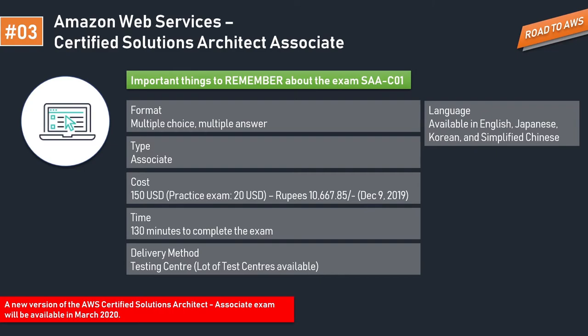When converted to rupees, that's around 10,667 as of December 9th. You have 130 minutes to complete 65 questions. The delivery method is going to a test center — there are many test centers available across India. You can log into the AWS certifications site to book or schedule your exam, which we'll cover in upcoming tutorials. The available languages are Japanese, English, Korean, and Simplified Chinese — we'll be going with English.